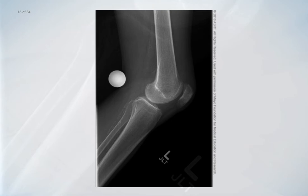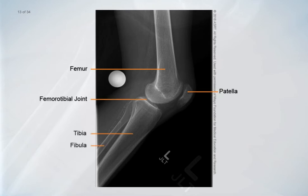The lateral projection will provide a lateral view of the distal femur, patella, femoral tibial joint, and the proximal tibia and fibula. Adjacent soft tissue structures are also visualized.